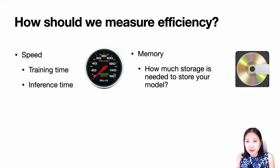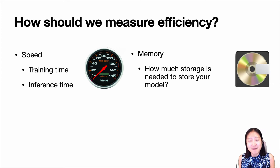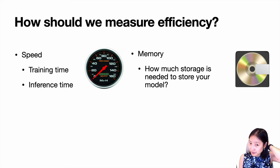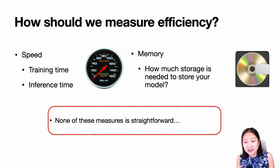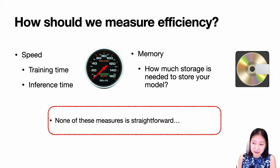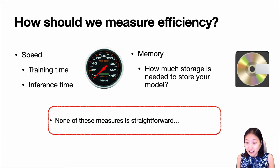How do you measure using the same amount of resources? There are two potential criteria: one is speed — training time or inference time — and the other is memory, meaning how much storage is needed to store your model. Neither of these measures is very straightforward. Speed depends heavily on hardware architecture and parallelizability. For memory, questions arise about what counts as your model, such as whether to include the TensorFlow runtime. So both require careful planning, just like designing evaluation metrics for task performance.